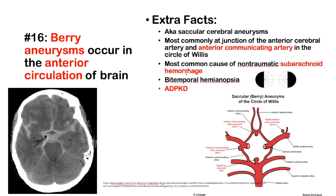Berry aneurysms are the most common cause of non-traumatic subarachnoid hemorrhages, presenting as a thunderclap 'worst headache of your life' onset. This differs from epidural hematoma, which appears as a concavity, or subdural hematoma, which appears as a convexity on imaging. It is particularly high yield to remember that autosomal dominant polycystic kidney disease is associated with Berry aneurysms.